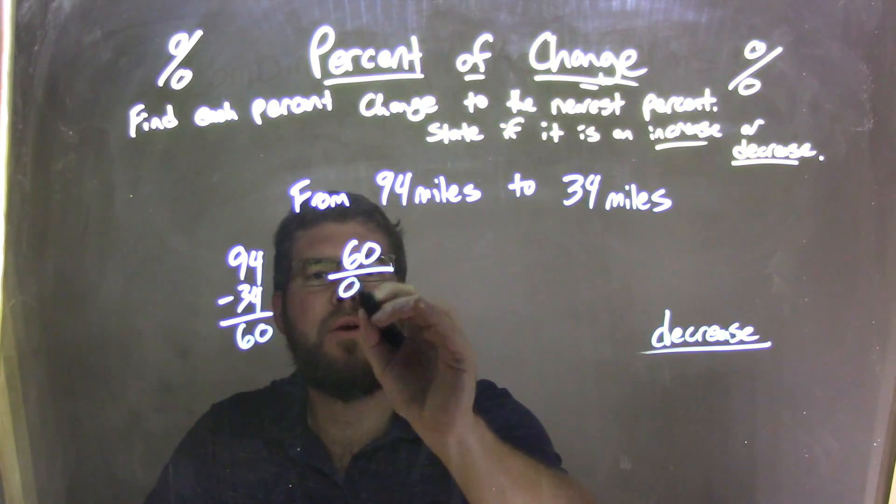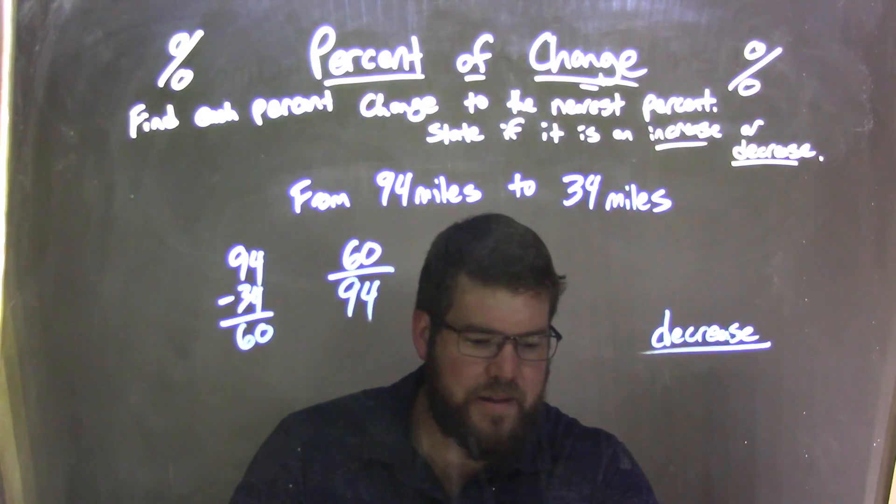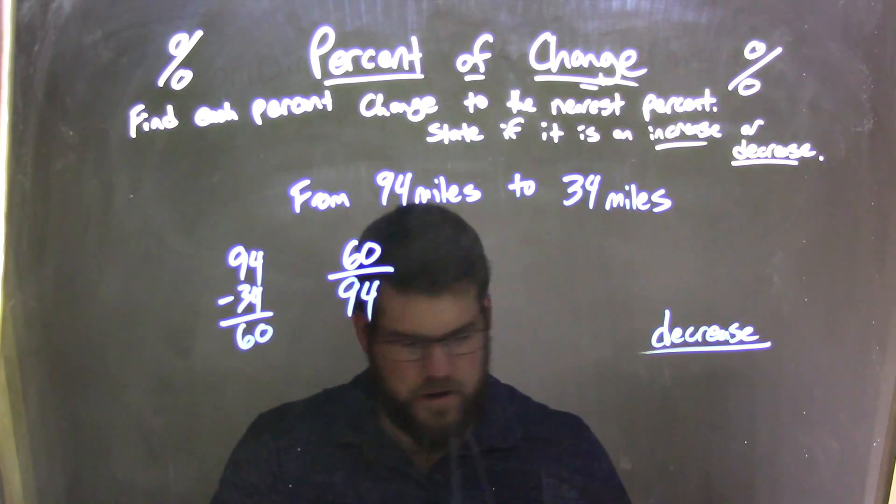We take that 60 miles and divide it by our first number, 94. Using our calculator, we take that 60, divide it by 94, and we have 0...